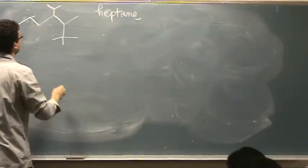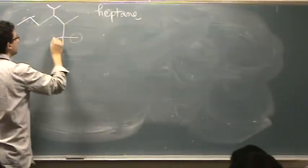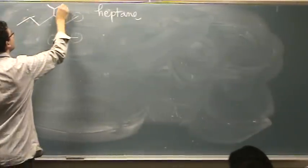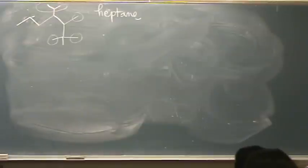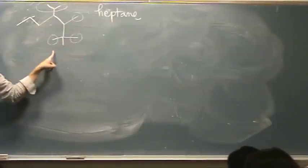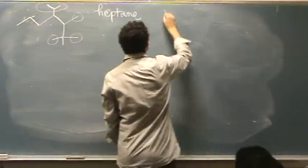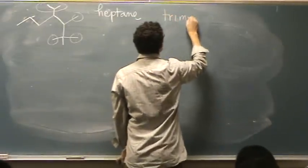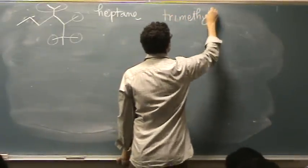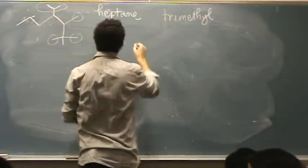Now the substituents, which would be here, here, here, and there. Well, these three are methyls, so it's a trimethyl. So we got a trimethyl. And then this one here is an isopropyl.